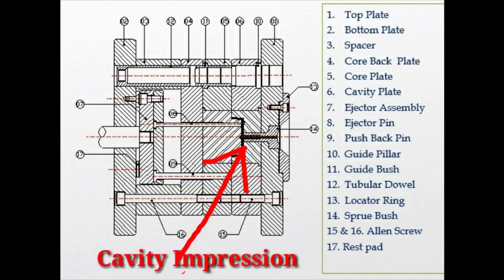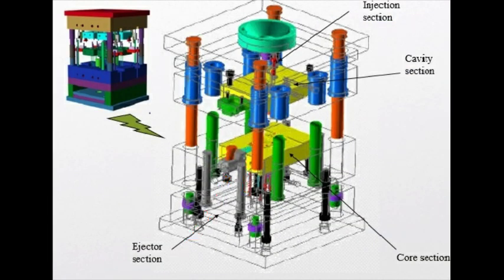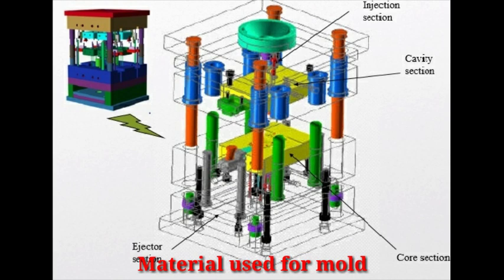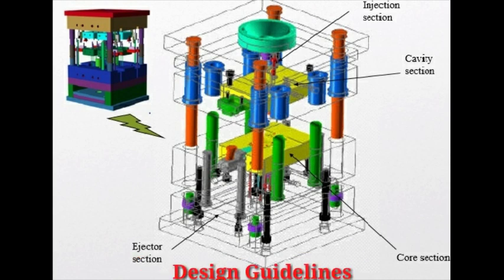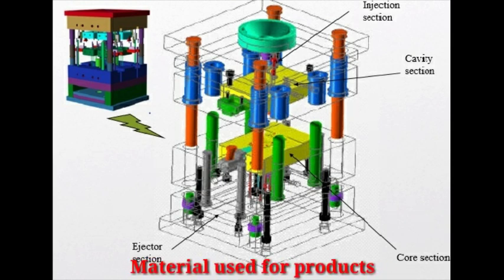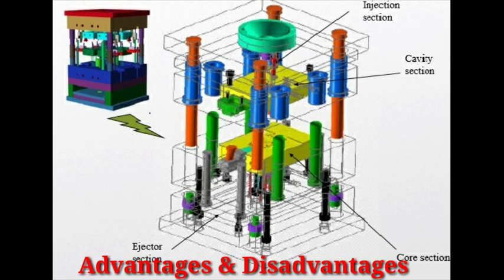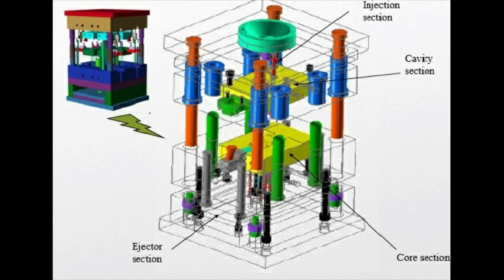For any manufacturing process going to start, first we should understand some points like which type of manufacturing processes we have to use to produce that product, which material we are using for the mold, what are the design guidelines for making a mold, and what are various types of materials used for the products and its advantages and disadvantages. All these points we should remember before going to manufacture any product or selection of any manufacturing process.